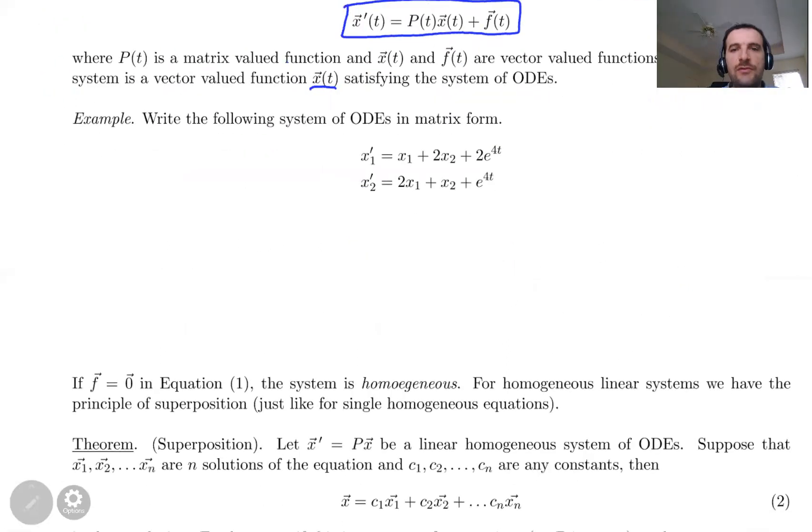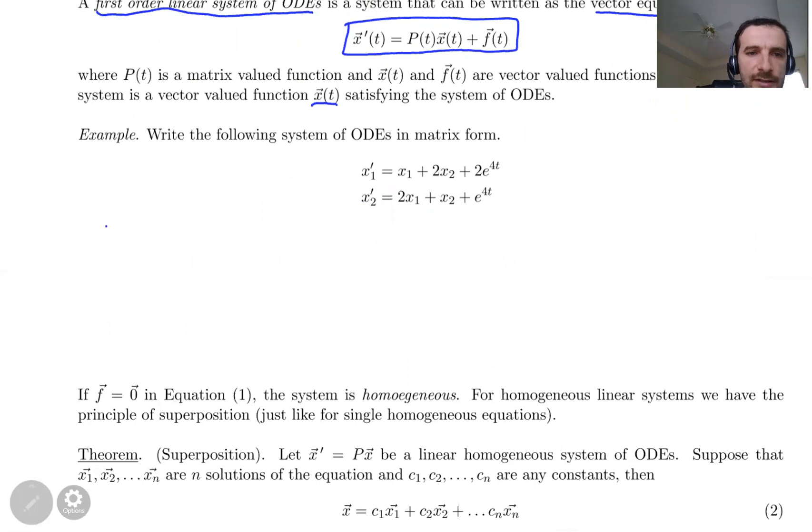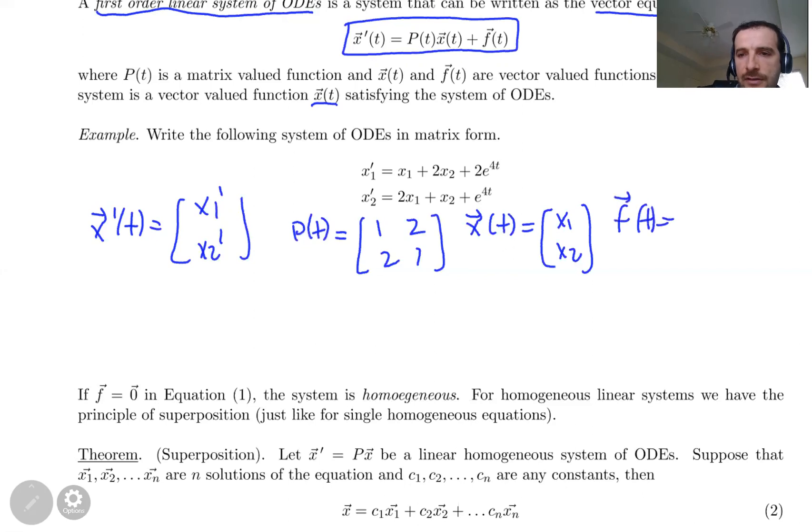Let's look at this example: write the following system of ODEs in matrix form. In this case, x arrow prime of t is equal to x1 prime and x2 prime. What is P(t) here? Look at the coefficients of x1 and x2, and order matters, be careful: 1, 2, 2, 1. I can write x(t) as x1 and x2. And finally, f(t) is equal to 2e to the 4t and e to the 4t.